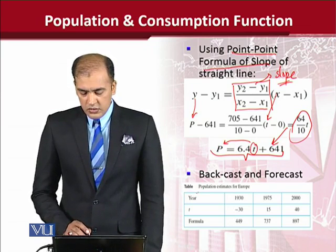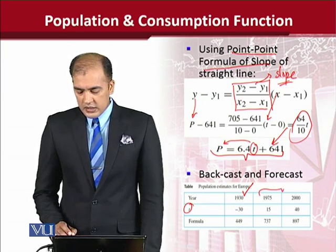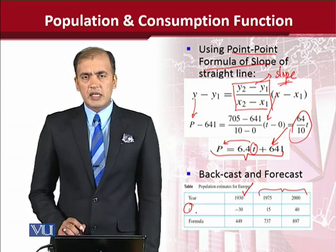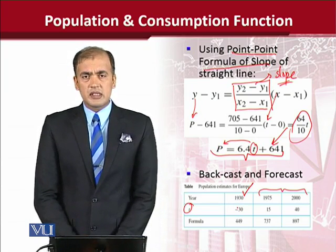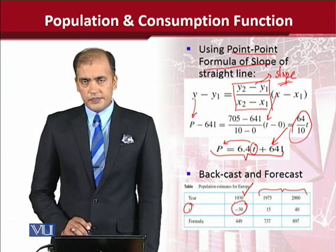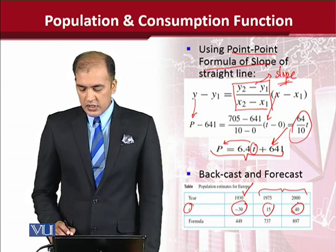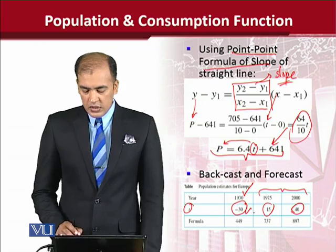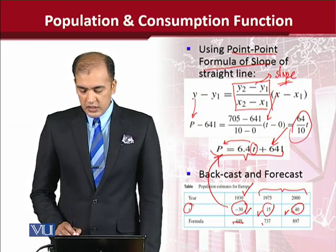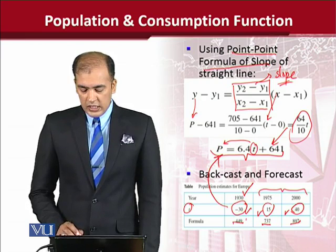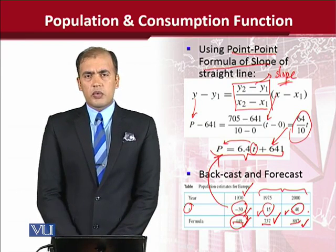In the table shown, t is in years. Since we have data for 1960 and 1970, backcasting goes 30 years back from 1960, making t equal to minus 30. Going 15 years ahead gives 1975, and 40 years ahead gives the year 2000. Substituting these values of t into the function yields estimated population values for both past and future.